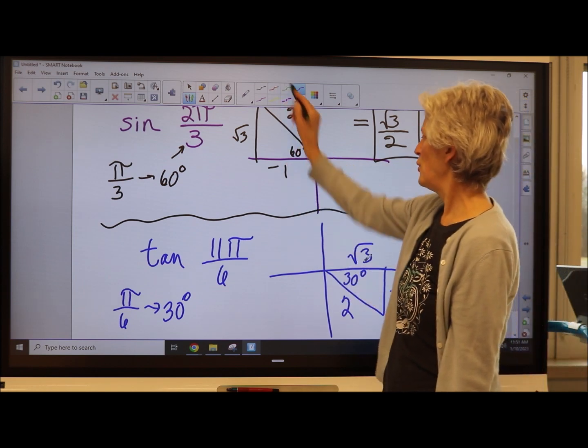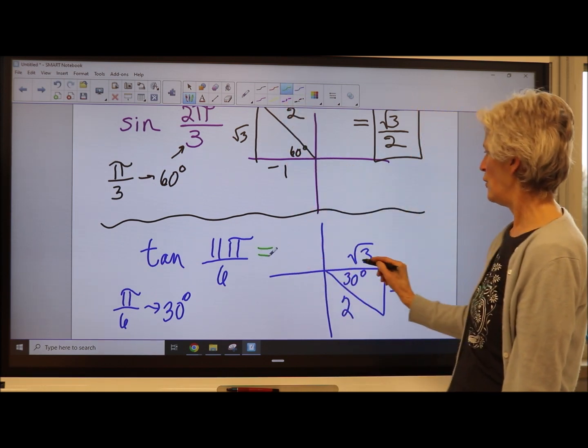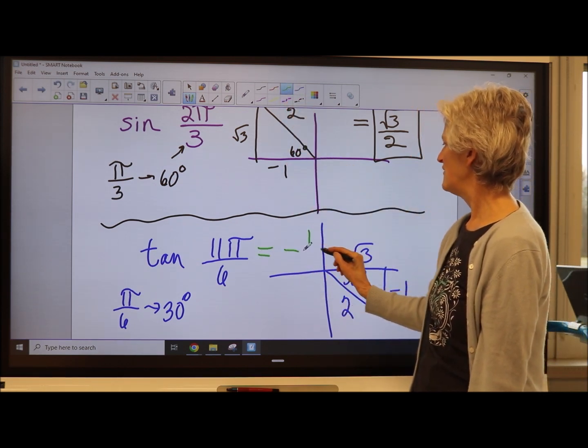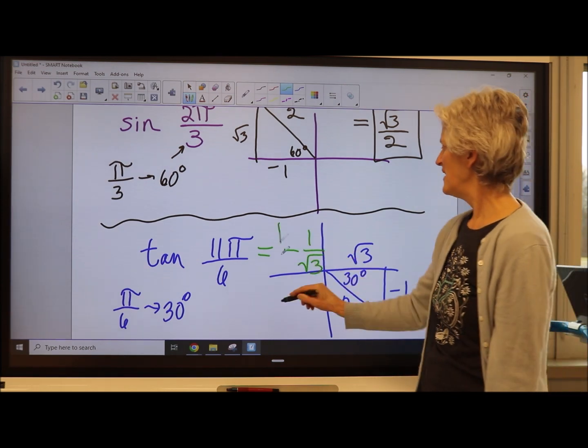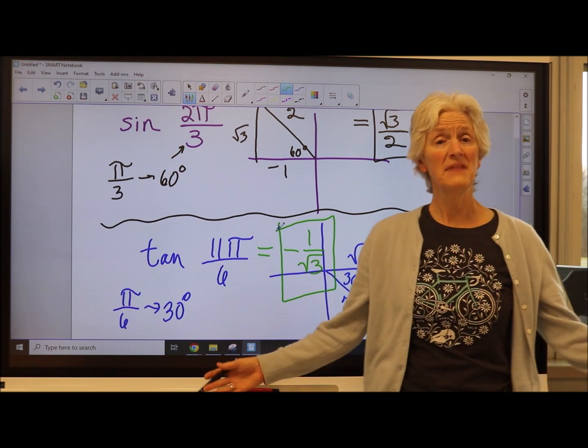So the tan will be y over x, which is negative 1 over the square root of 3. And there's your answer. Not too bad.